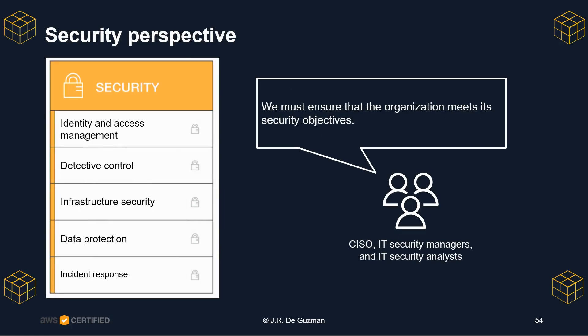Next we have the Security perspective. Stakeholders from the Security perspective — for example, the Chief Information Security Officer (CISO), IT security managers, and IT security analysts — must ensure that the organization meets security objectives for visibility, auditability, control, and agility in the cloud. Security perspective stakeholders can use the AWS Cloud Adoption Framework to structure the selection and implementation of security controls that meet the organization's needs.